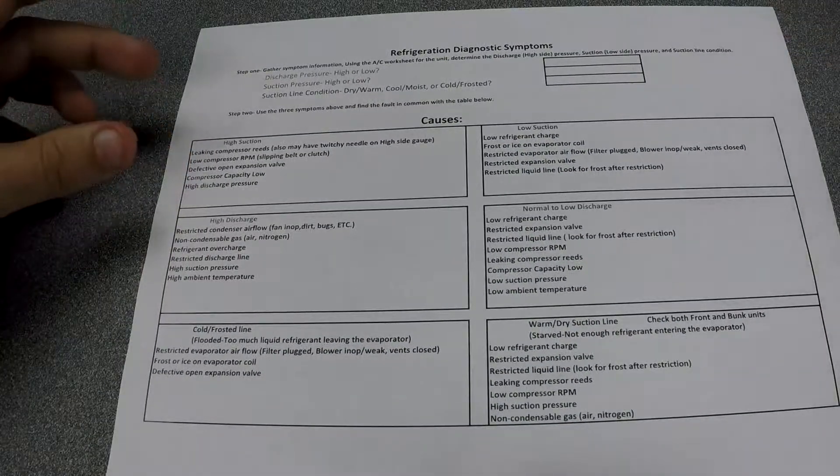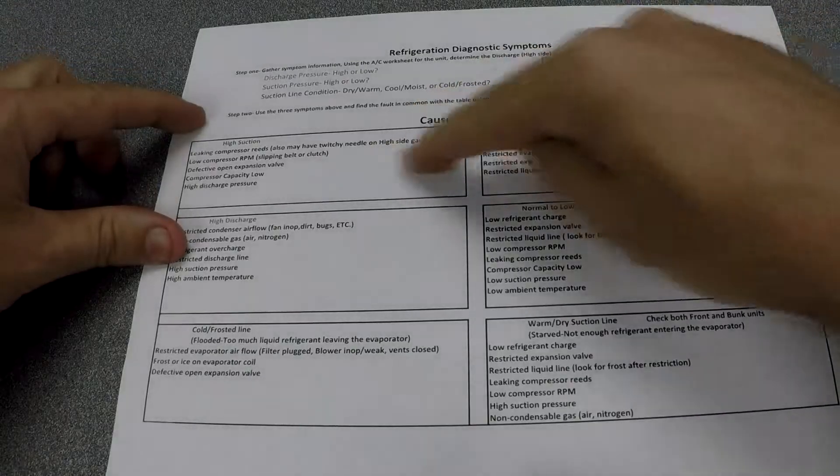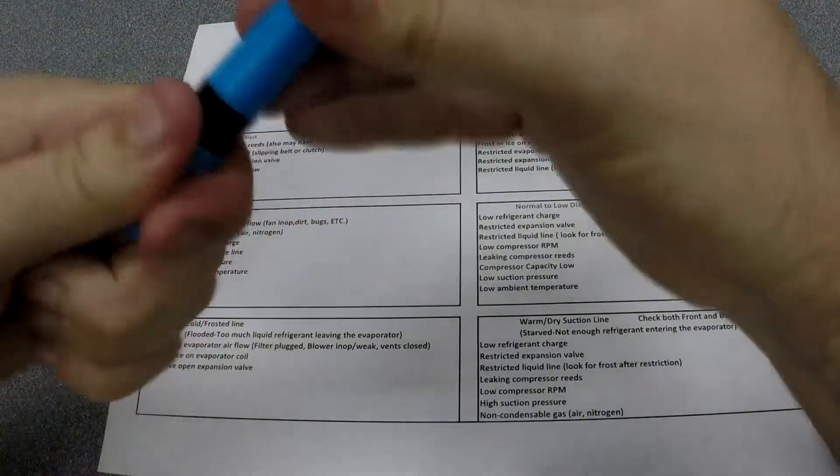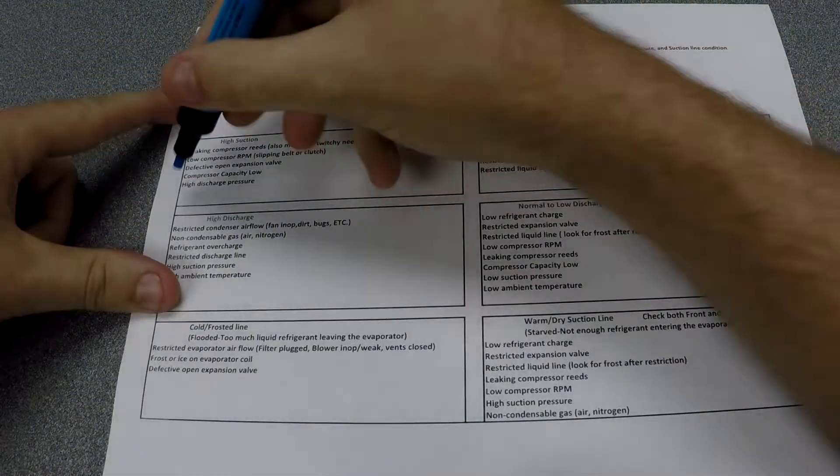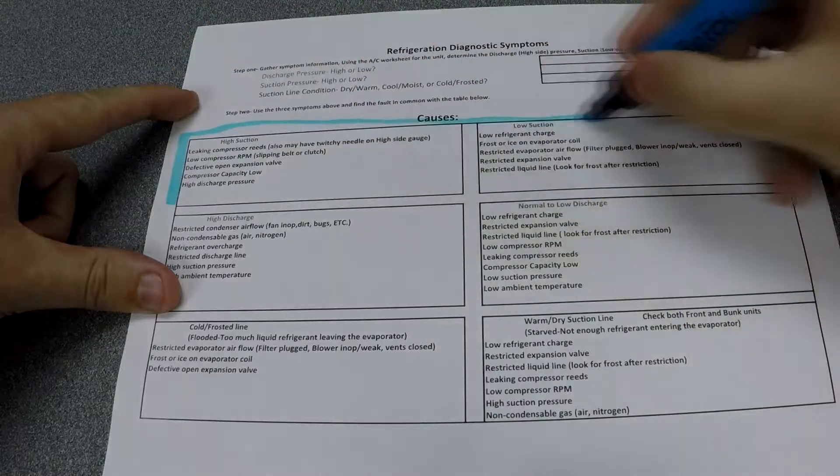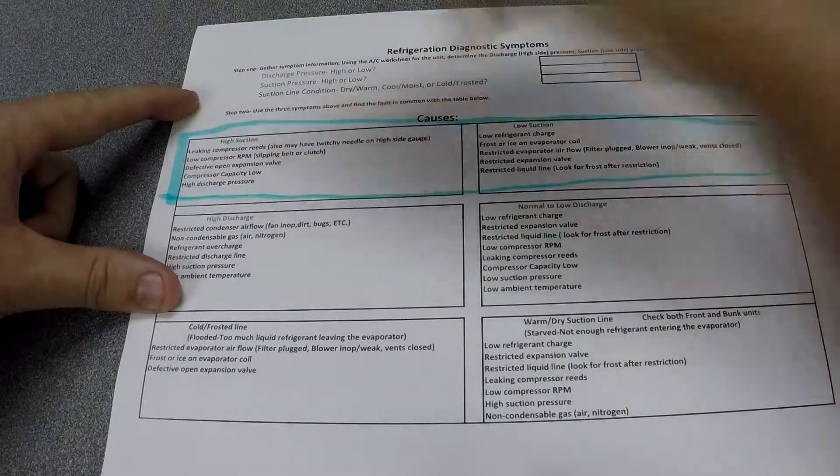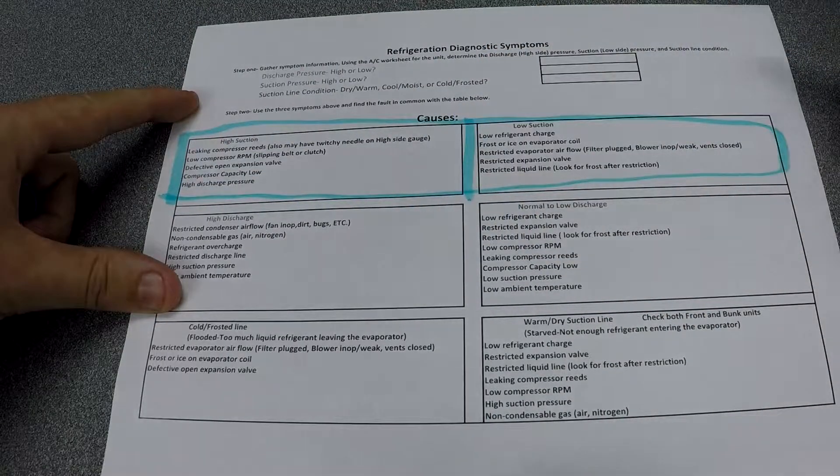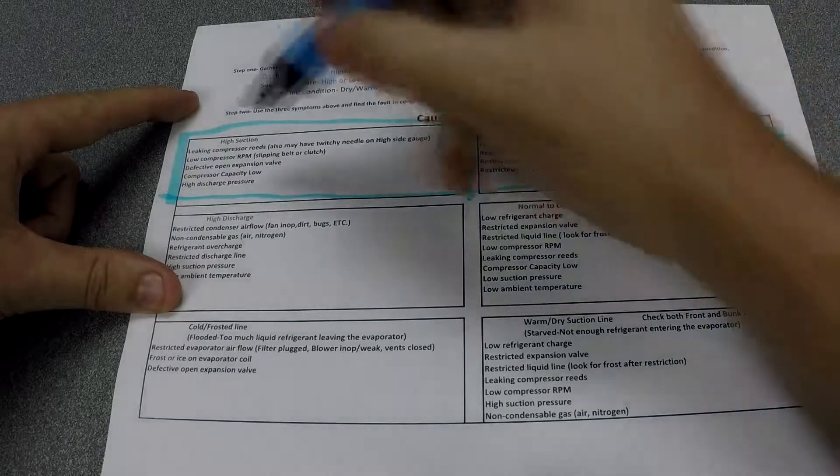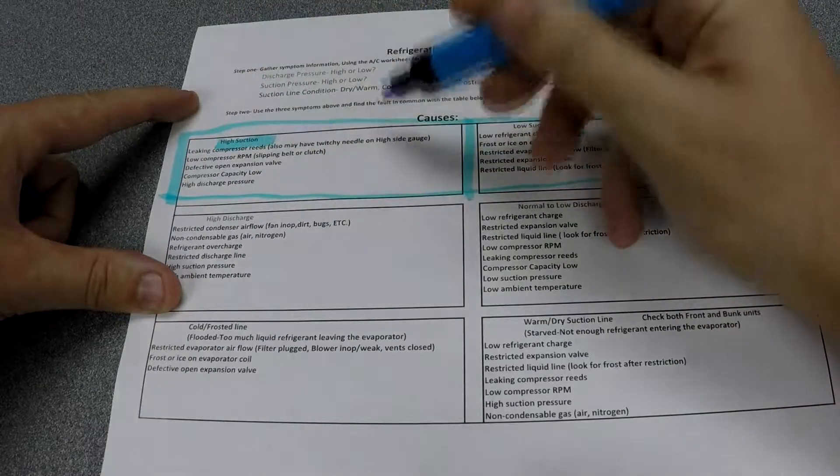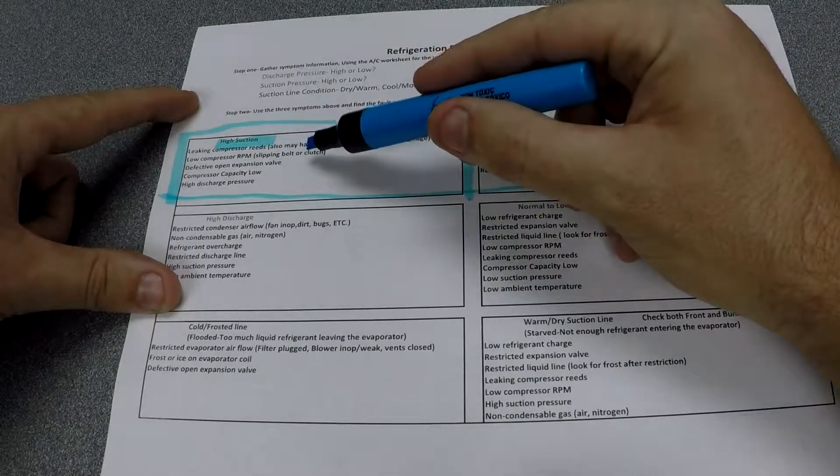So I'm just going to color these all blue. If your suction pressure is too high, you use the high suction chart. Leaking compressor reads, low compressor RPM, defective open expansion valve, compressor capacity low, just worn out.